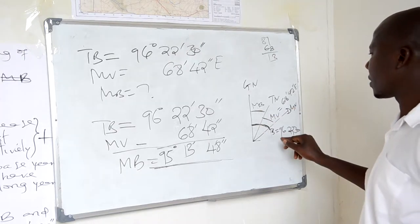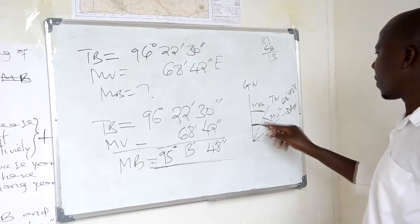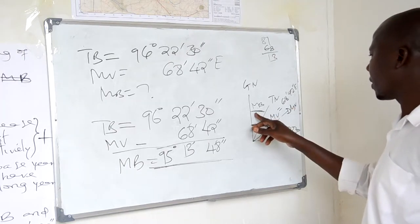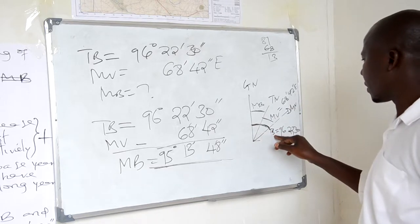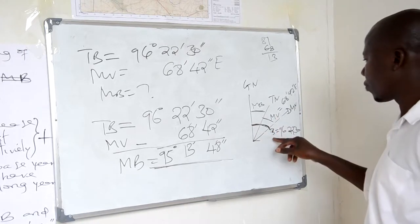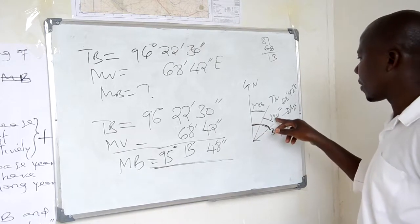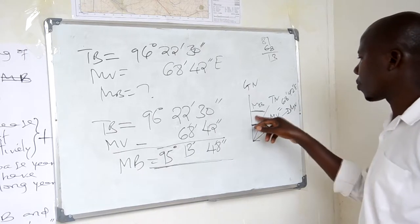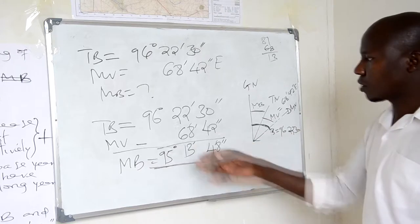Whenever I'm looking for the magnetic variation, I have to take the true bearing minus magnetic bearing, so as to obtain what we have been getting there.